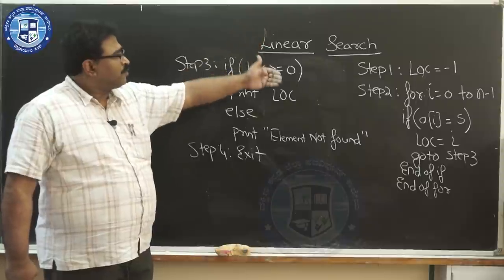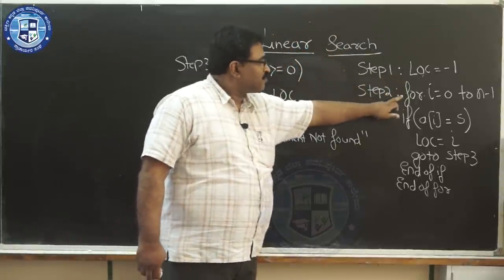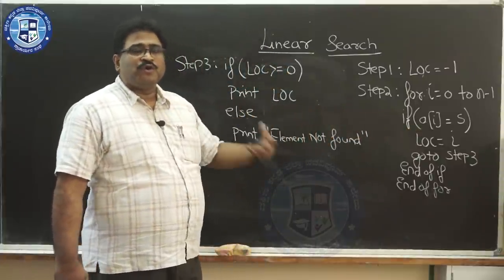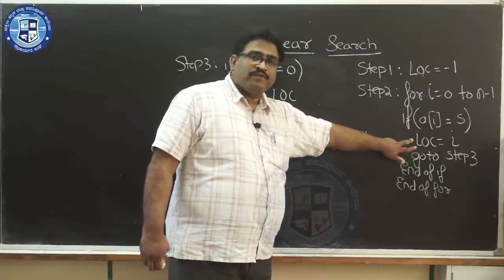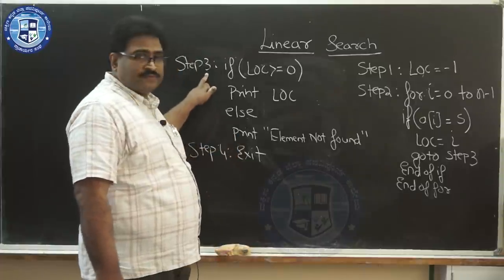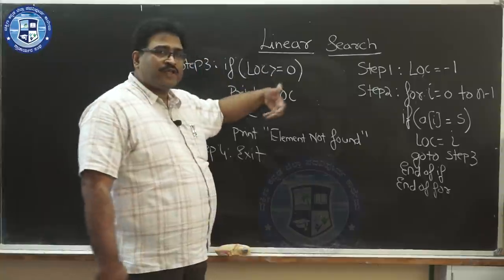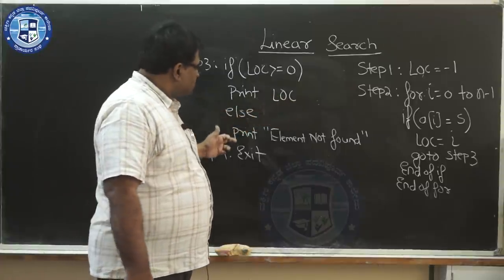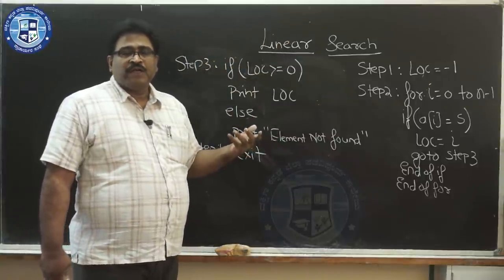To summarize the algorithm: Step 1 initializes location to minus 1. Step 2 traverses from 0 to n minus 1 and compares a[i] with s — if true, set loc to i and go to step 3. Step 3 checks if loc is greater than or equal to 0; if yes, print the location; else print 'element not found.' With this, we have finished the first searching method — linear search.